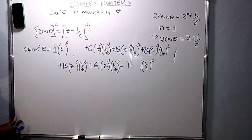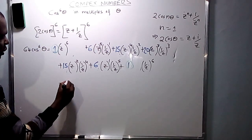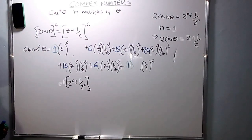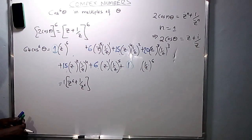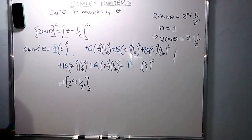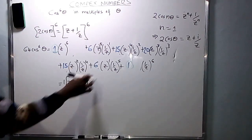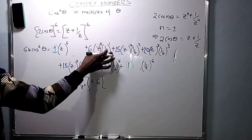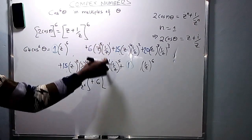The terms with the coefficient of 1 are z raised to power 6 plus 1 over z raised to power 6. Both have a coefficient of 1. Remember, (1/z) raised to power 6 is 1 over z raised to power 6, because 1 to power 6 is 1, leaving 1 over z to the 6th.